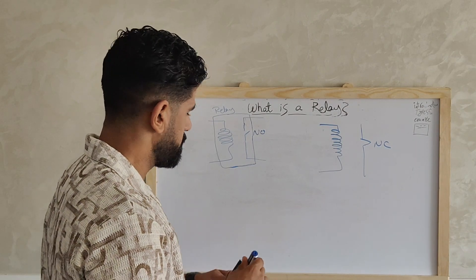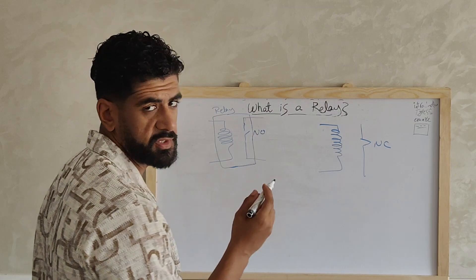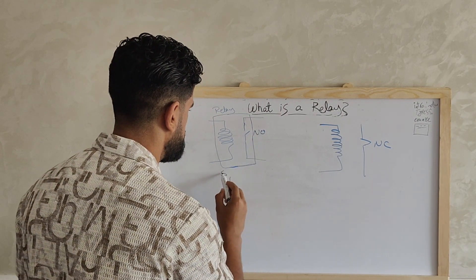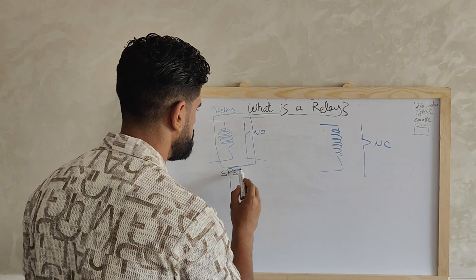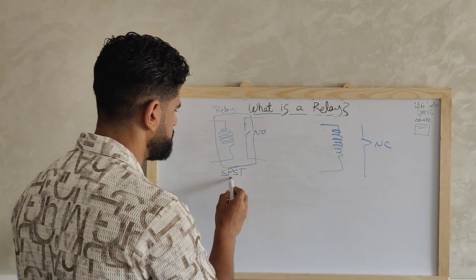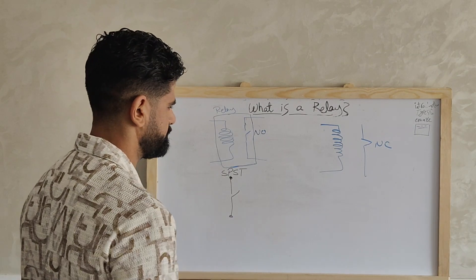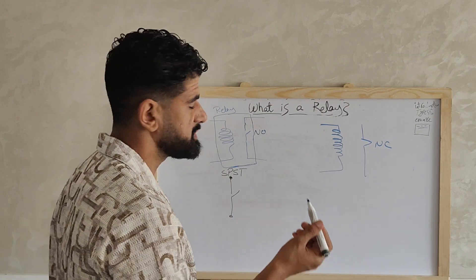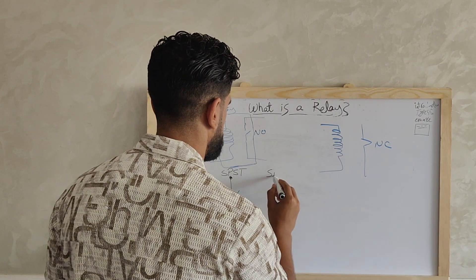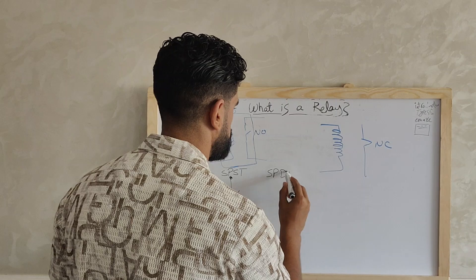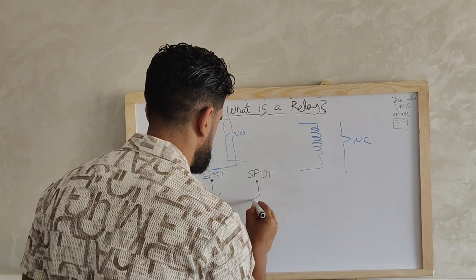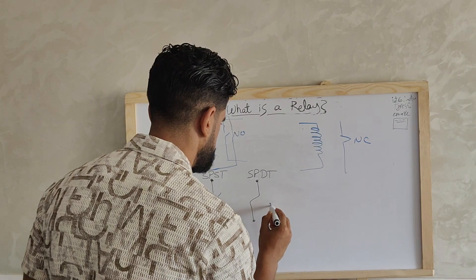Now we have different types of contacts. This contact, for example, is called a single pole single throw switch, which means that it has a single input and a single output. We could also have a single pole double throw switch, which has one input and two outputs.